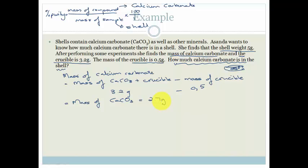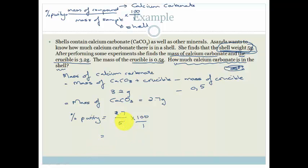Now all we want to do is find the percentage purity. Percentage purity is the mass of the compound — 2.7 — over the mass of the sample — 5 grams — times 100. Popping that into our calculator gives us 54%. So 54% of the shell is made up of calcium carbonate.